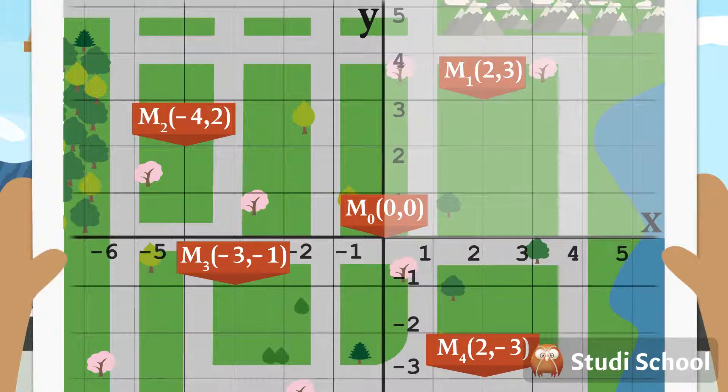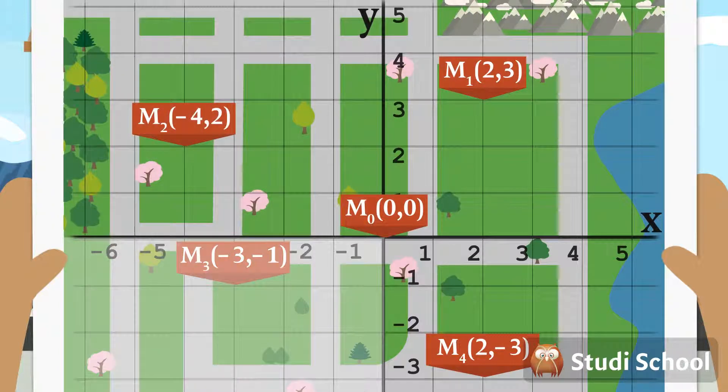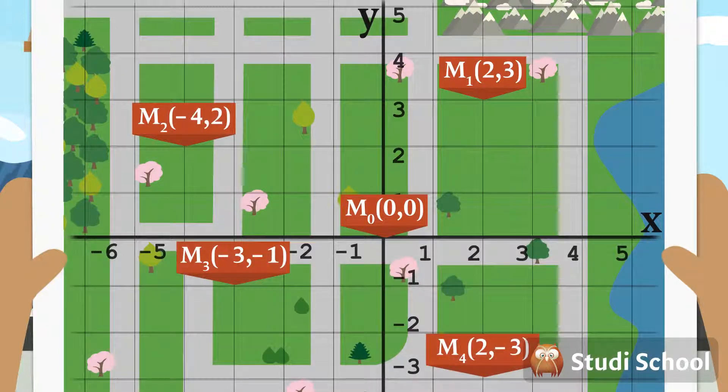You can see that Michael, Granny, the shop and the school are each in different areas. These areas are called quadrants.